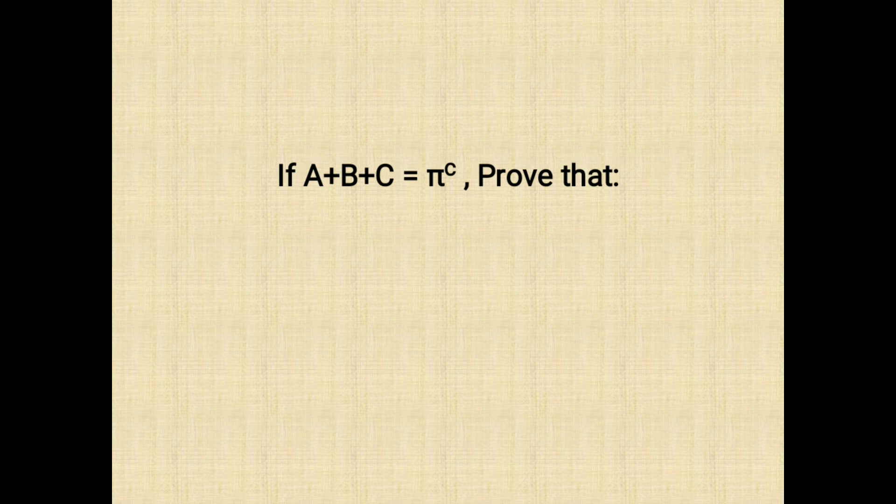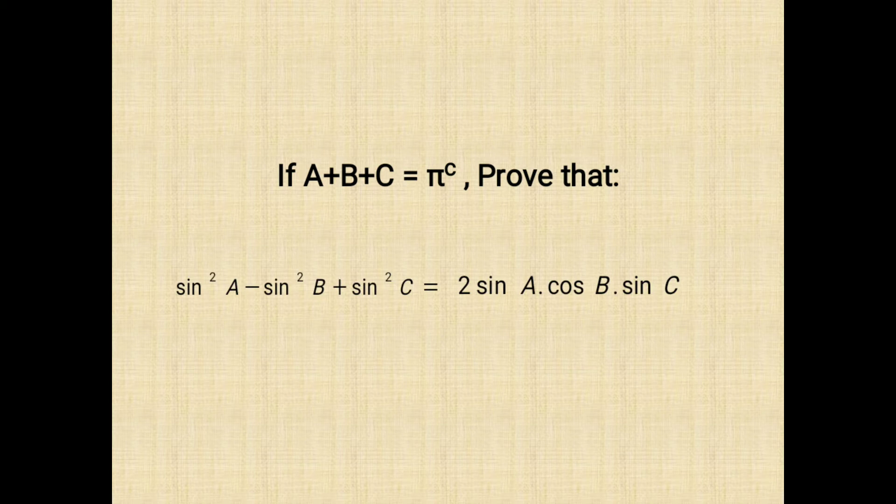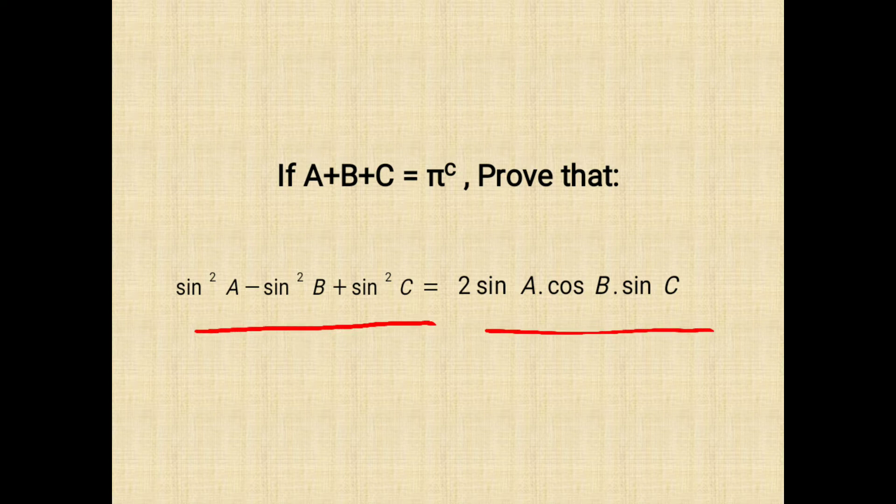Our today's question is: if A, B, and C are the angles of a triangle, that is if their sum is 180 degrees, we are expected to prove sine square A minus sine square B plus sine square C equals 2 sine A into cos B into sine C. For your kind information, this question is slightly different than the question in trigonometry part 11 of this channel.